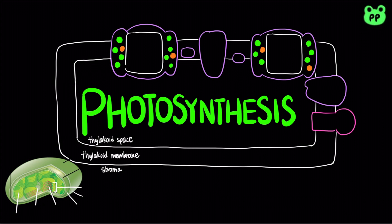Photosynthesis in plants takes place in the chloroplast, which contains an outer membrane and an inner membrane. The chloroplast is filled with dense fluid known as stroma and connected sacs known as thylakoids. The interior of a thylakoid is known as the thylakoid space.